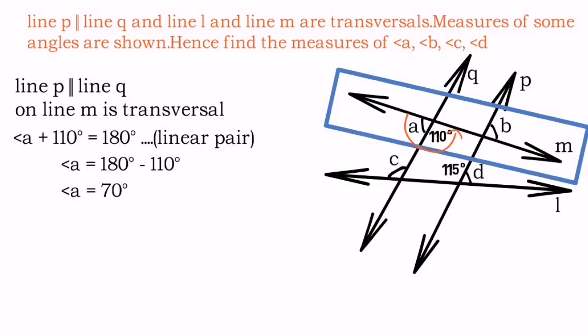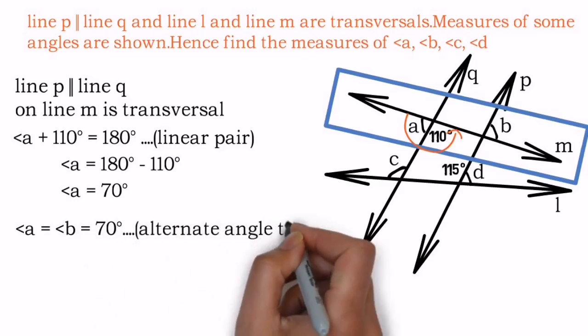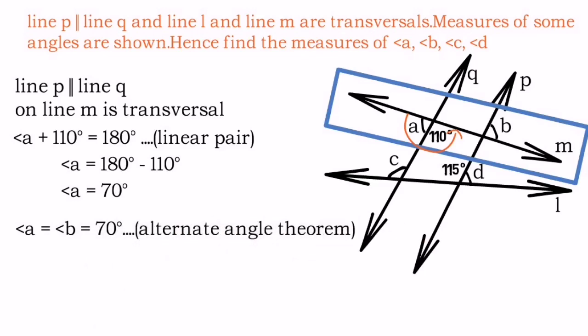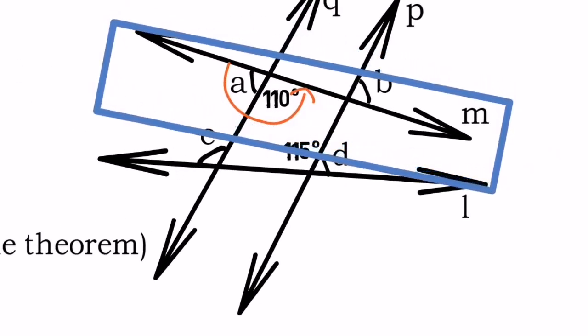So the first angle is found. Now if you observe angle a and angle b in the diagram, you will come to know that they are exterior alternate angles and that makes them equal in measurement, so angle b also equals 70 degrees.